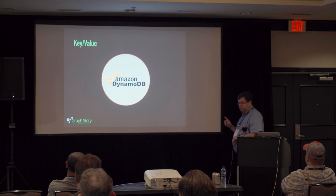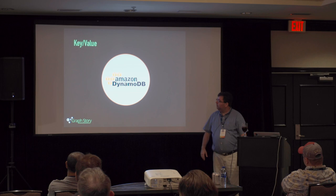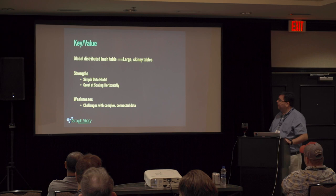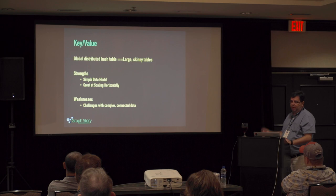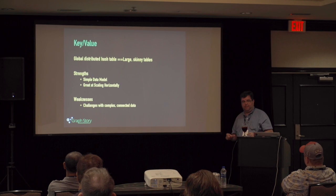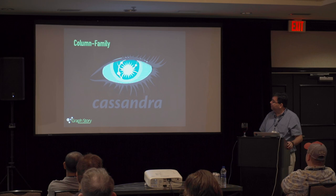One example is a key-value store. Amazon's DynamoDB is probably the most popular, most-used example. It's just keys and values — two columns, keys and values all the way down. They're important because of their really simple data model; Amazon uses them for their e-commerce cart. You can represent a customer ID with an array of shopping cart items — really fast, great at scaling horizontally. The challenge is with complex and connected data.